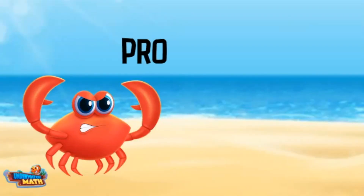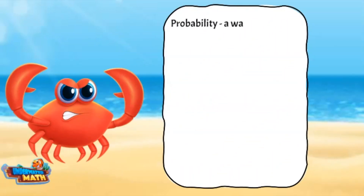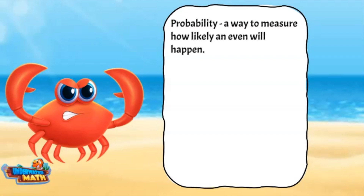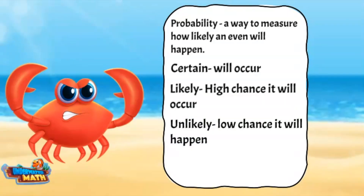Welcome to the beach! Let's get started talking about probability. Probability is a way to measure how likely an event will happen. Here are some words used to describe the probability of a situation: the word 'certain' means the event will occur; 'likely' describes a high chance of an event occurring; and 'unlikely' describes a low chance of an event happening. When an event cannot happen, the word 'impossible' is used.